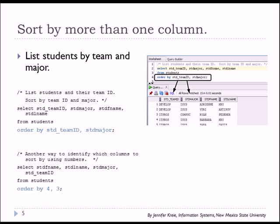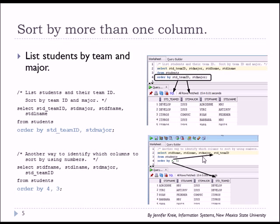There's another way to specify the columns in the ORDER BY clause. If I don't want to type out the actual column name, I can reference that by using the column in its sequence, the order in which it appears in the SELECT clause. We see here that team ID is listed fourth: first name, last name, major, then team ID.